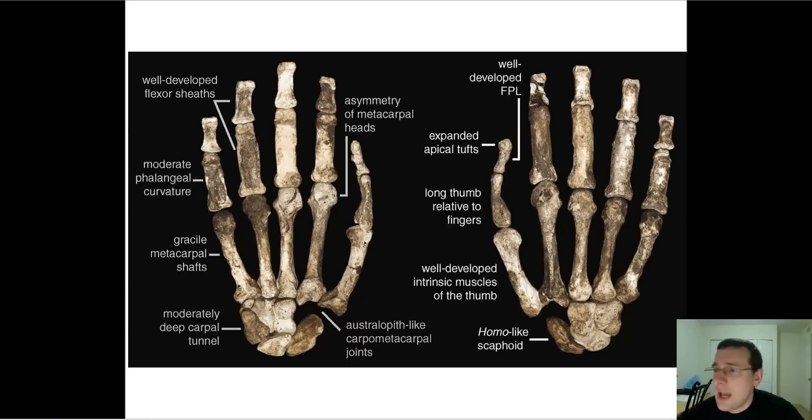Now, another example is mosaic structures, another example that shows the power of evolution. A structure that evolves for a purpose but ends up being used for another. Hands of humans, which are used for grasping and used for tools, actually evolved for other reasons.